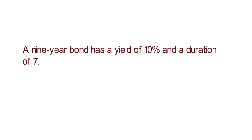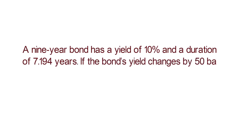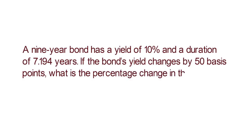Let's take an example. A 9-year bond has a yield of 10% and a duration of 7.194 years. If the bond's yield changes by 50 basis points, what is the percentage change in bond's price? If we plug in the numbers,